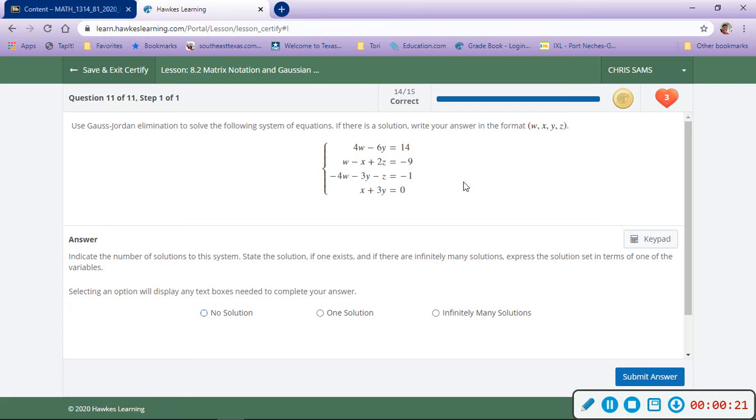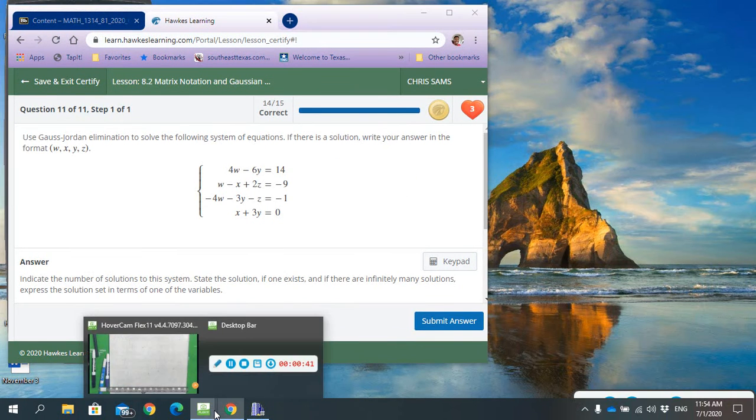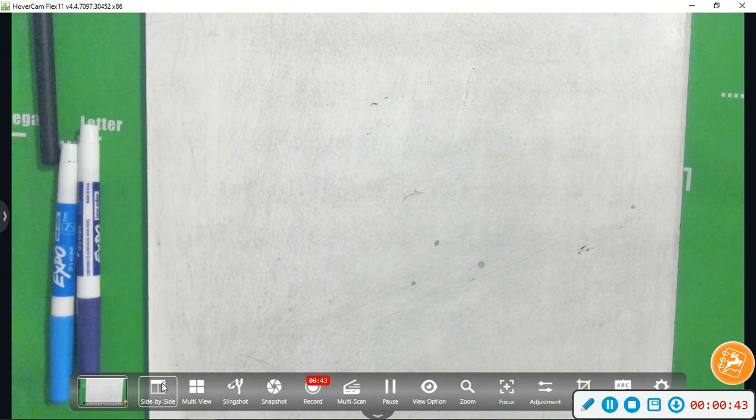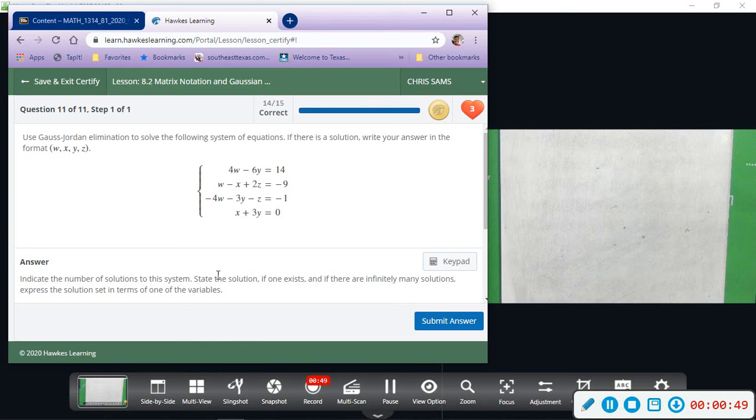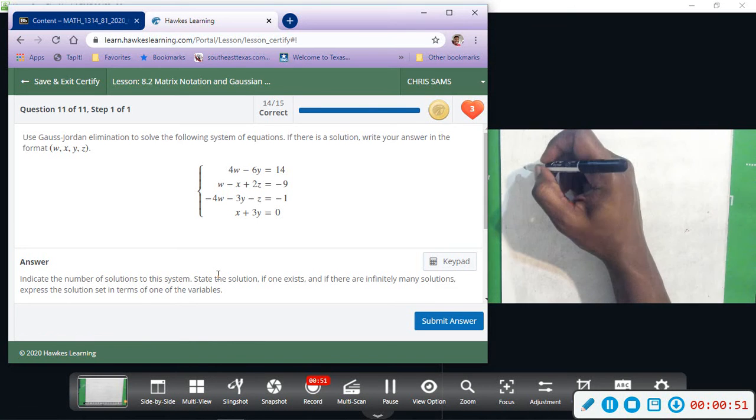It says in the solution we're going to write our answer in format of w, x, y, z, so we have four variables in each equation and then we have a number. Let me go ahead and write down the matrix, so I need to get my screen up so you can kind of see what's going on. Okay, so the first row we have 4w.